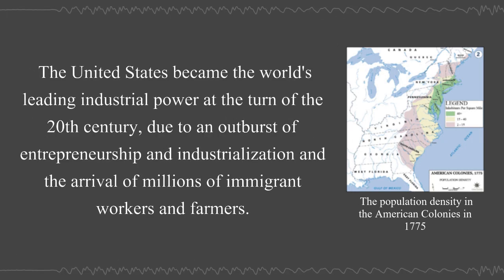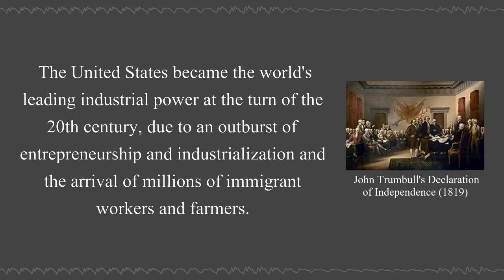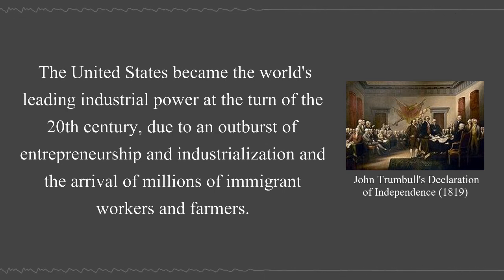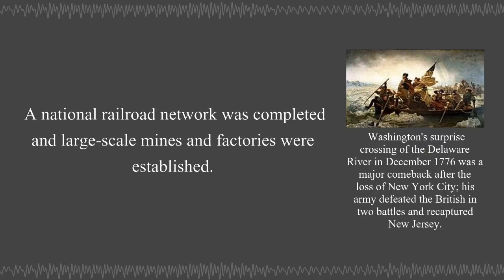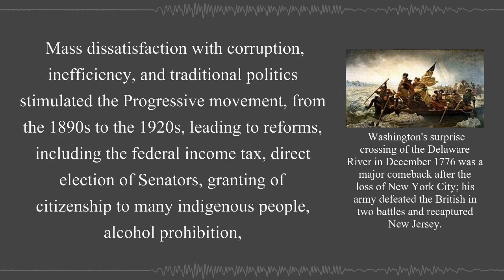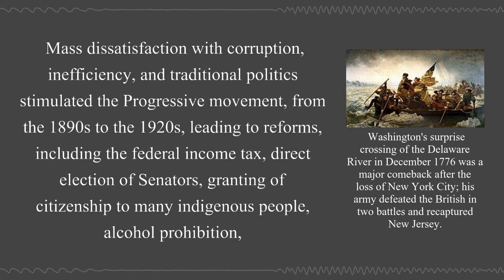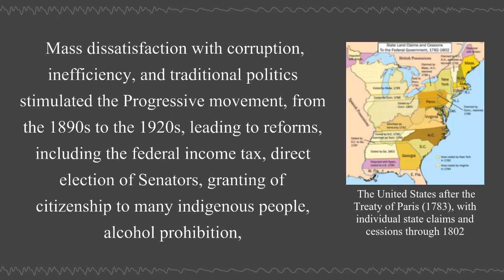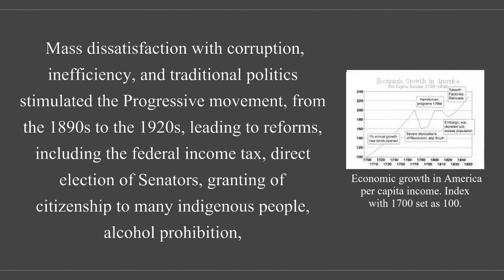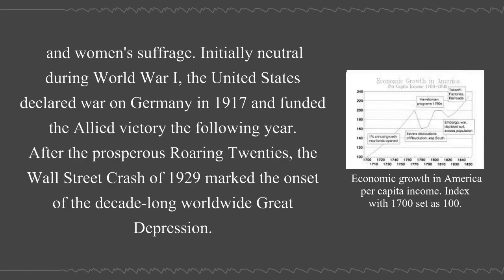The United States became the world's leading industrial power at the turn of the 20th century due to an outburst of entrepreneurship and industrialization and the arrival of millions of immigrant workers and farmers. A national railroad network was completed and large-scale mines and factories were established. Mass dissatisfaction with corruption, inefficiency, and traditional politics stimulated the progressive movement from the 1890s to the 1920s, leading to reforms including the federal income tax, direct election of senators, granting of citizenship to many indigenous people, alcohol prohibition, and women's suffrage.